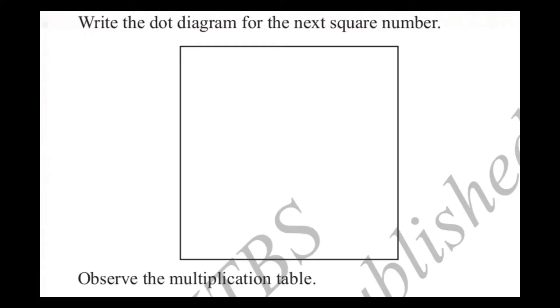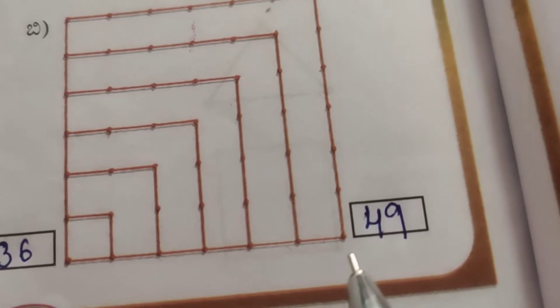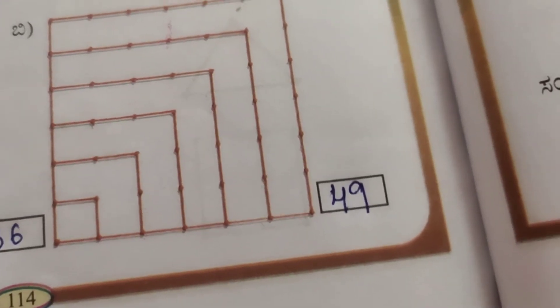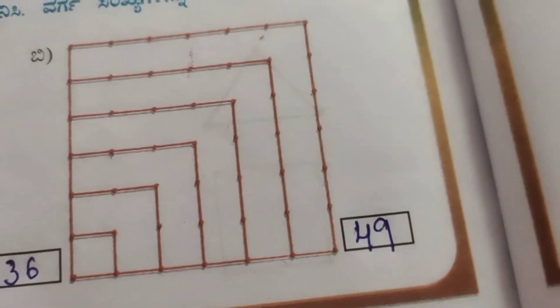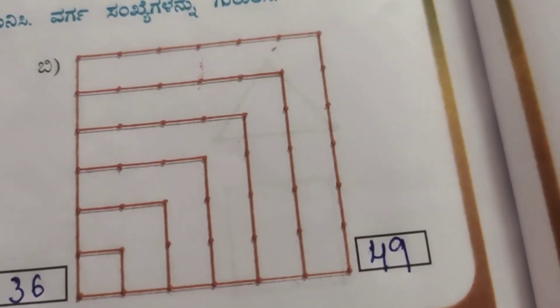Next: write the dot diagram for the next square number. We have written up to 49, so the next square number — draw the figure in the box.